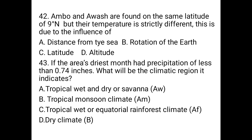Question number 42: Ambo and Awash are found on the same latitude of nine degrees, but their temperatures are strictly different. This is due to the influence of: A. distance from the sea, B. rotation of the earth, C. latitude, D. altitude. The difference in topography between two areas of the same latitude results in different temperatures. This is due to different topography — specifically altitude. The answer is D.